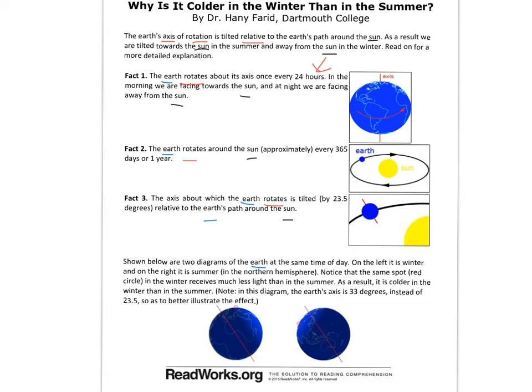Now the title, 'Why is it colder in the winter than in the summer,' gives me a clue that this is going to be about how our seasons are determined. That's a prediction I have. When I look at the first visual where we have the earth and you can see a red arrow going across South America into Africa, and you can see the red line — it's not directly in the middle of the earth, but very close. It's pointing upward. That is called the axis.